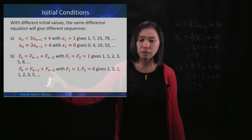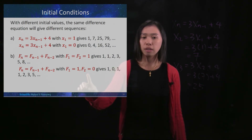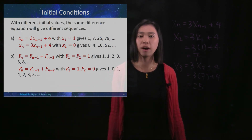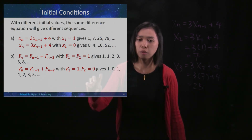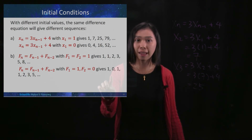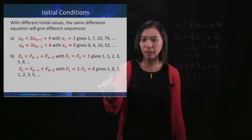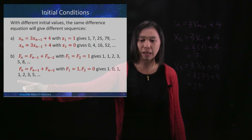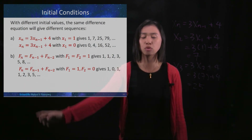We'll use the same difference equation, but this time change f₂ to 0. Then we get 1, 0, 1, 1, 2, 3, 5, and so on. Let's check: 1 and 0 add together to give 1. Then 0 and 1 add together to give 1 again. Then 1 and 1 add to give 2. Then 1 plus 2 is 3, and 2 plus 3 is 5, and so on.